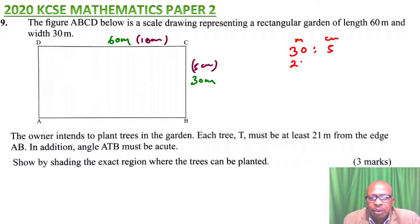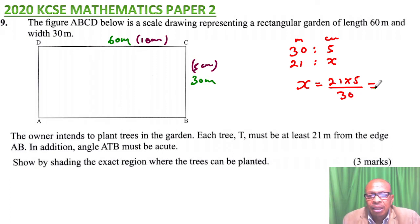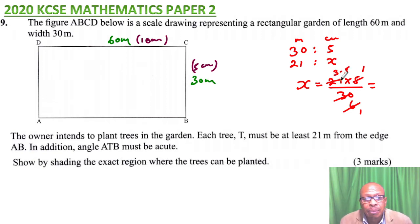What about 21 meters? We can say it is x. So x equals 21 multiplied by 5, divided by 30. Simplifying — divide by 5, divide by 3 — you get 3.5. So 21 meters is represented by 3.5 centimeters on the diagram.